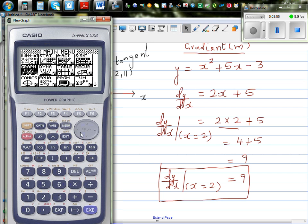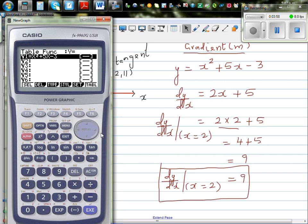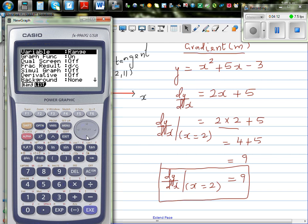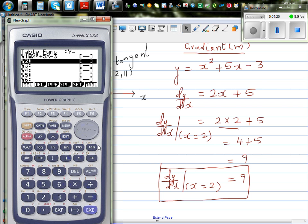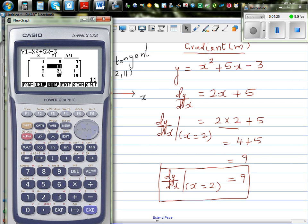Then you go to your table menu and type in the equation. So this is x squared plus 5x minus 3. And then one thing that you need to do before you go to table, your derivative has to be on. And then go to your table. So at 2, look at this point. When x is 2, y is 11. The gradient is 9. Can you see? dy by dx is 9.